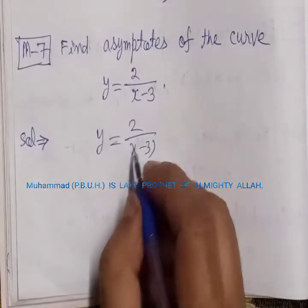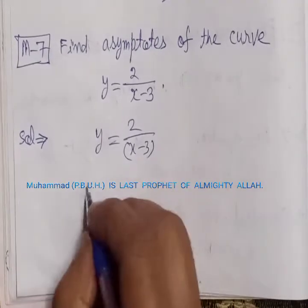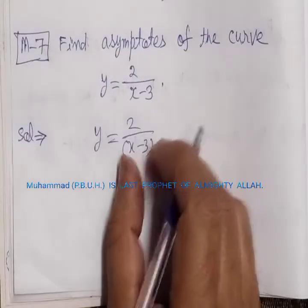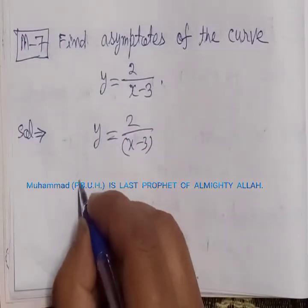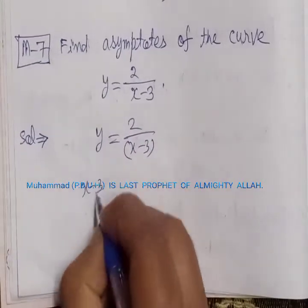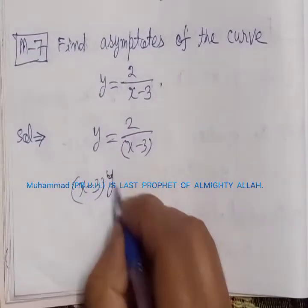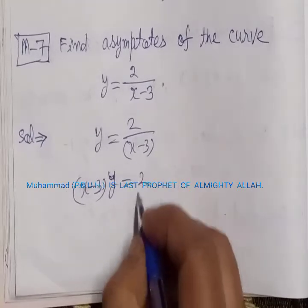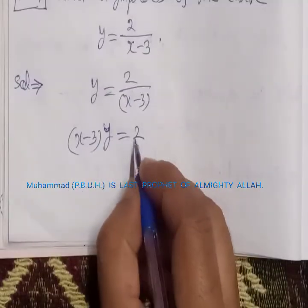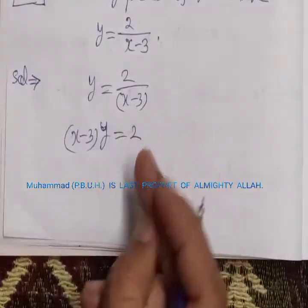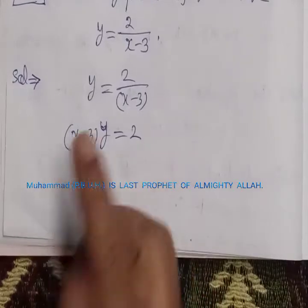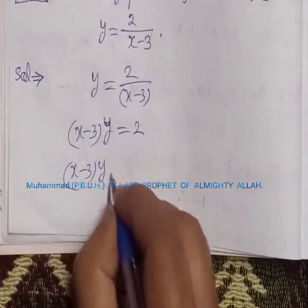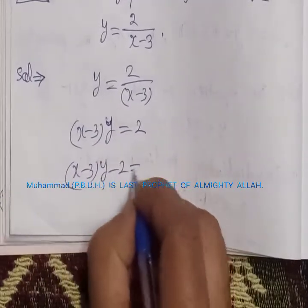The given equation of the curve is y = 2/(x-3). This equation can be rewritten by multiplying both sides by (x-3), giving us (x-3)y = 2. Transposing 2 from right to left, we get (x-3)y minus 2 is equal to zero.